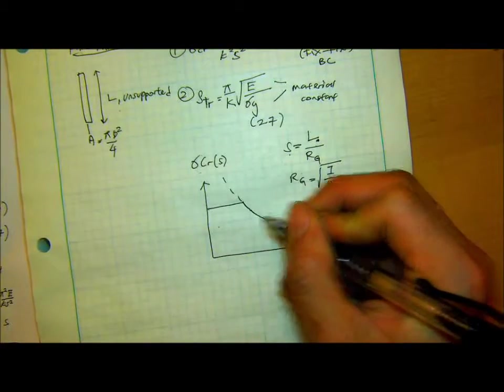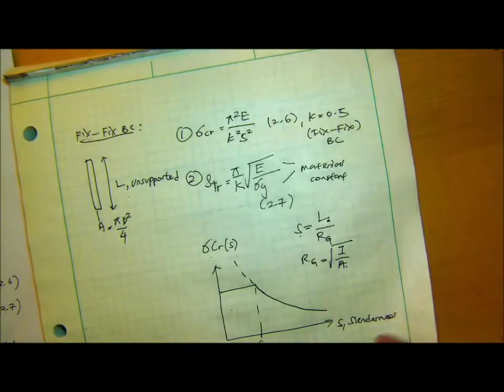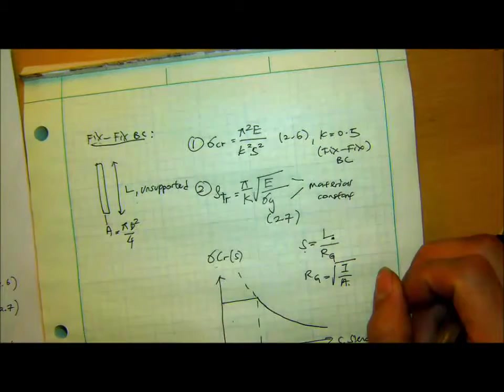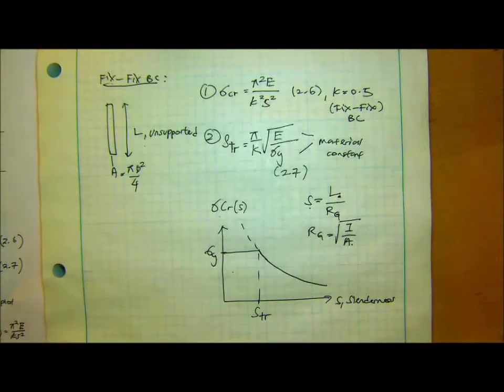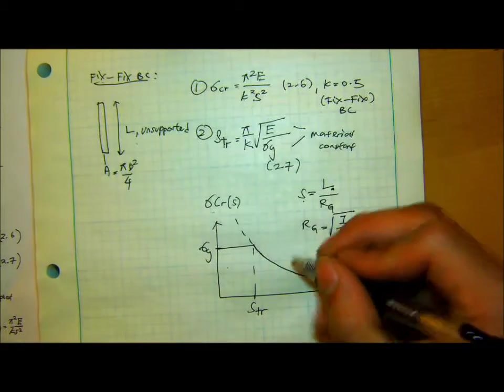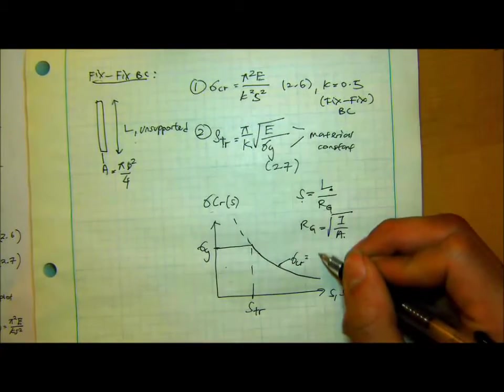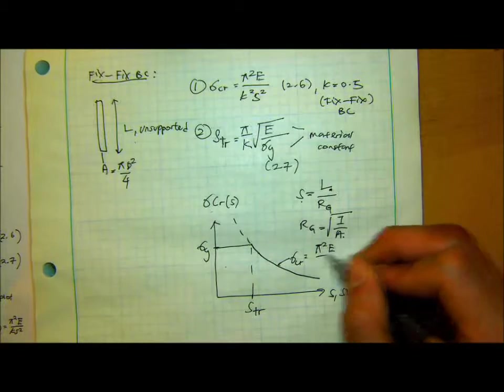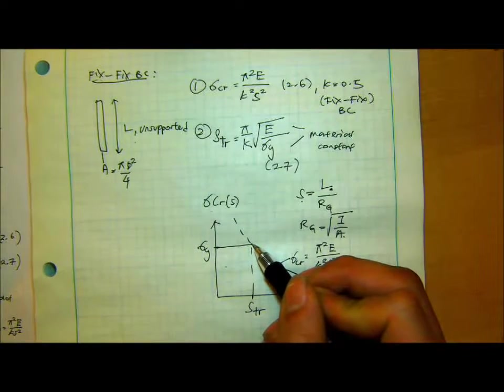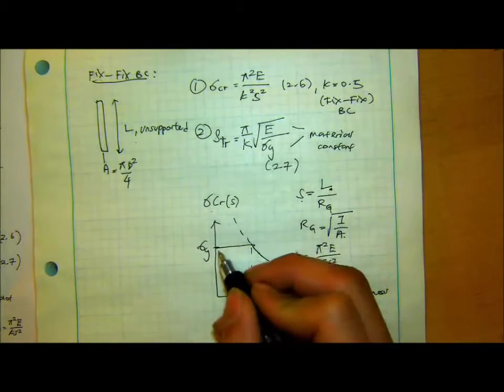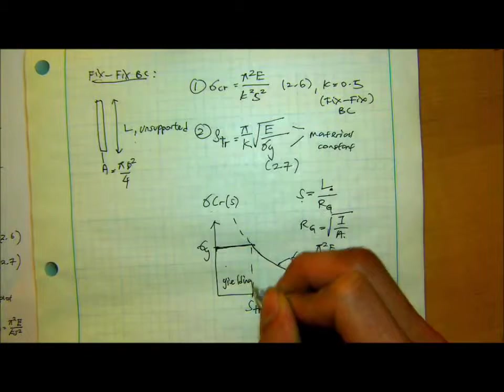So this here is STR. Because STR is found by assuming sigma critical is the yield strength. So that means here is actually sigma yield of the material. And the shape or the function of this is equation 1, which is the function of S. The moment that sigma critical is equal to yield strength, that's where we predict it to saturate. So this is yielding. And this is buckling.